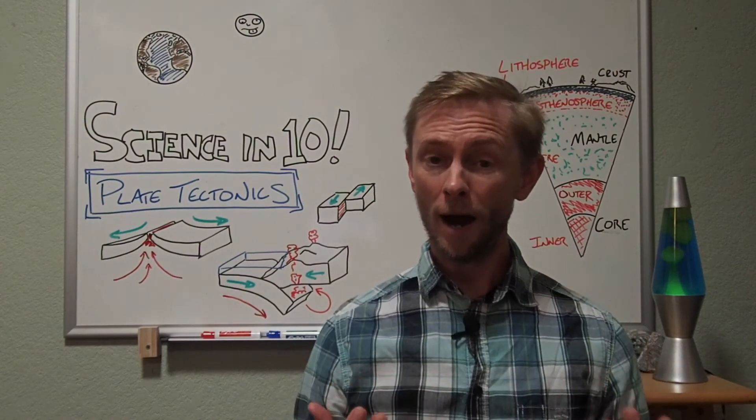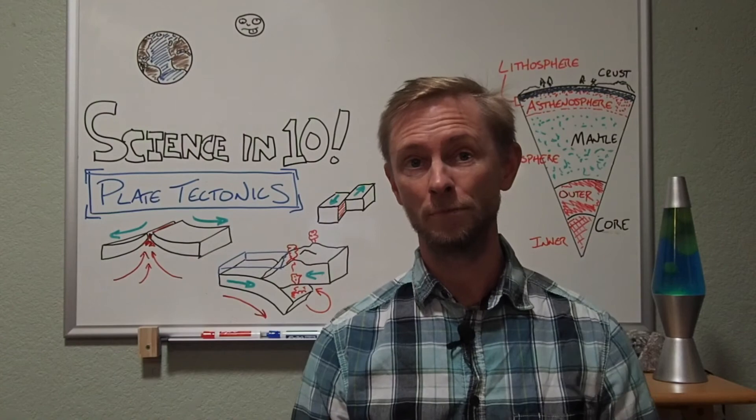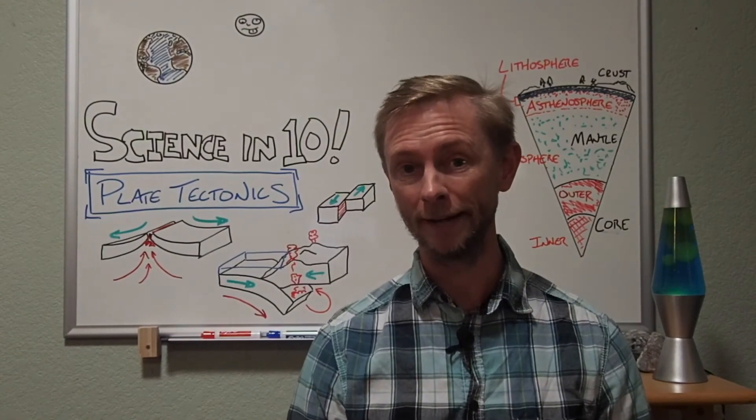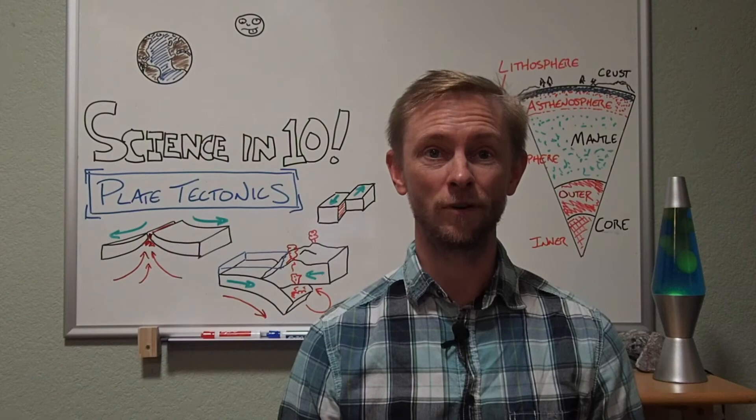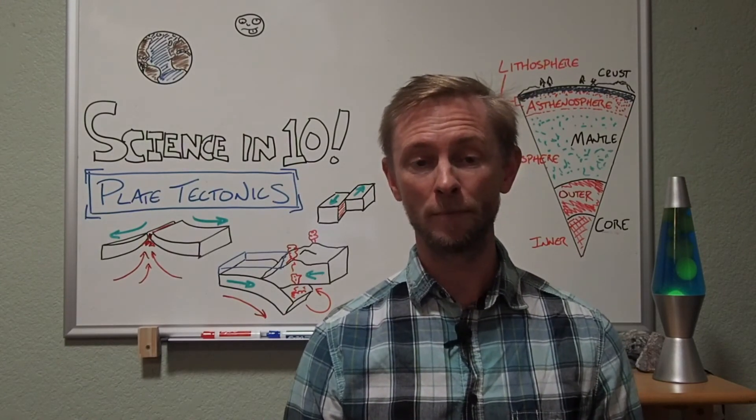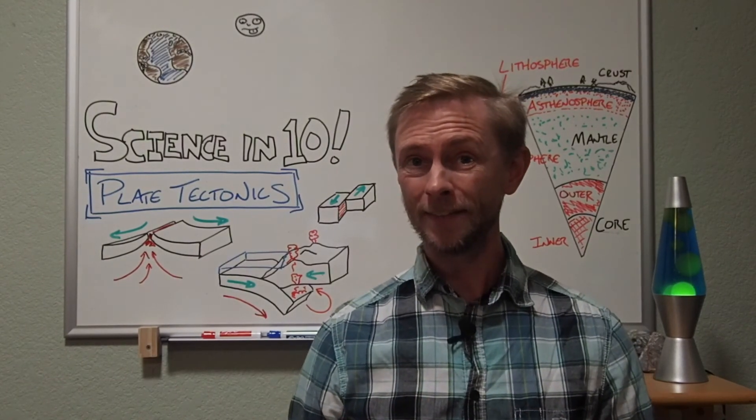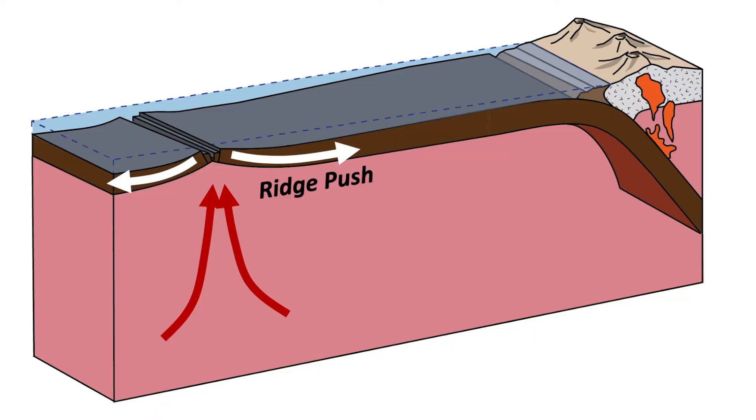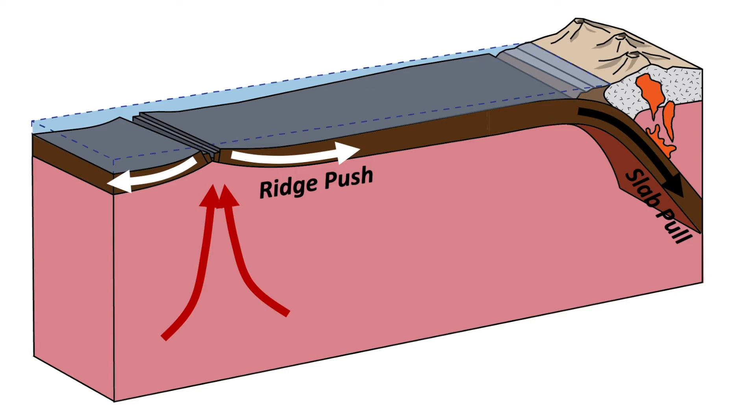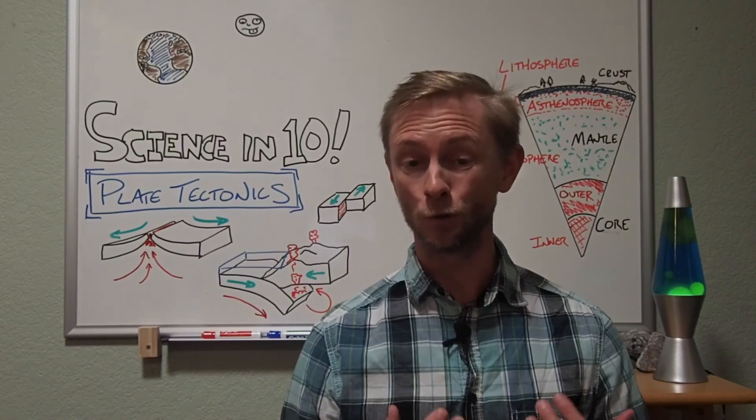But that's not all. On the opposite side of a tectonic plate from a ridge, you'll often find a convergent boundary where two plates are colliding. At convergent boundaries, the denser of the two plates involved will be shoved underneath the less dense plate and into the upper mantle in a process called subduction. Gravity and the density of the subducted plate, which is also called a slab at this point, pull the plate down into the mantle. Since the plate is rigid, this slab-pull process also tugs on the rest of the plate, dragging it along with.